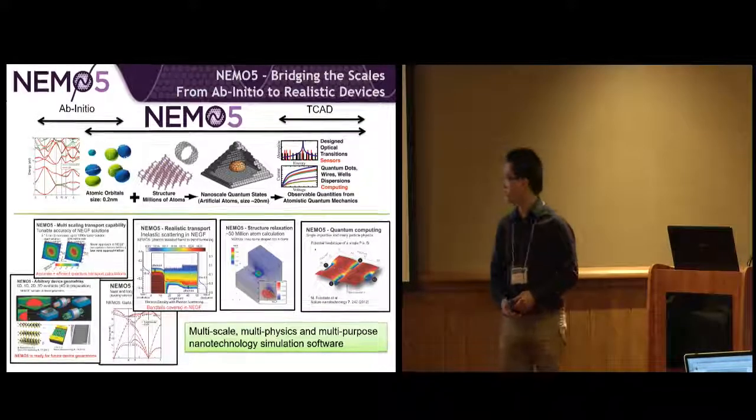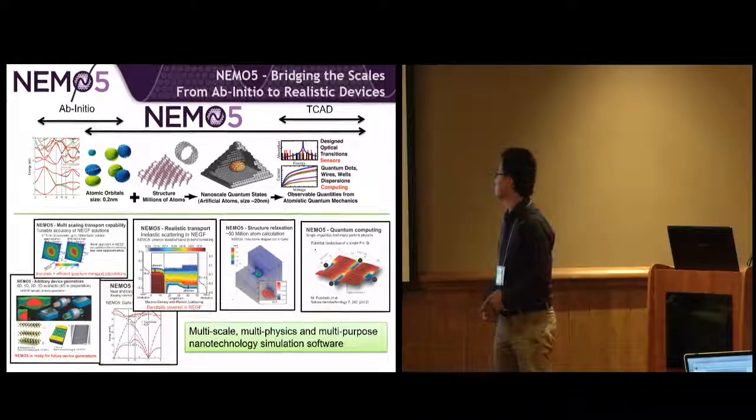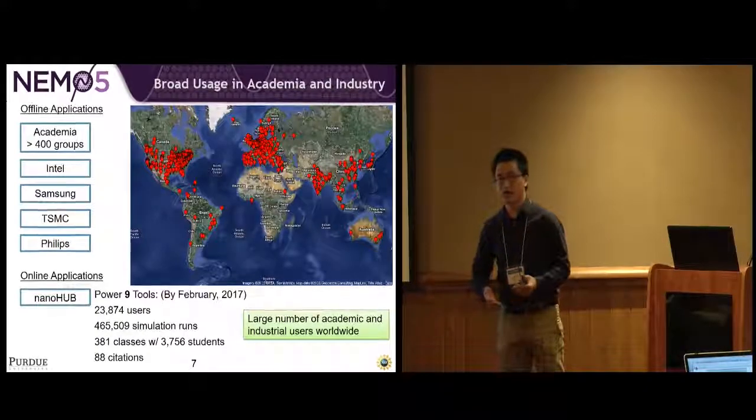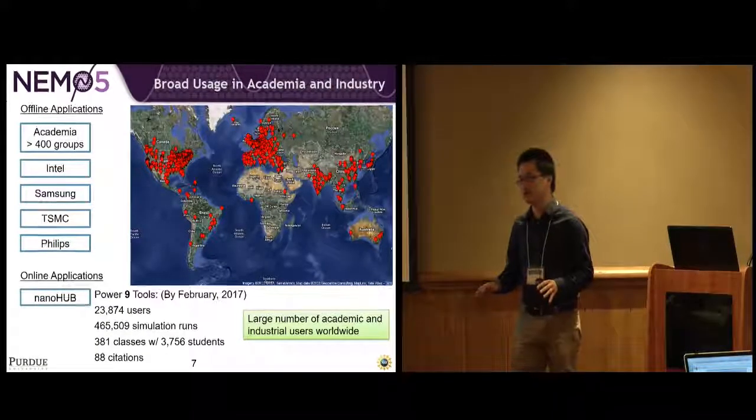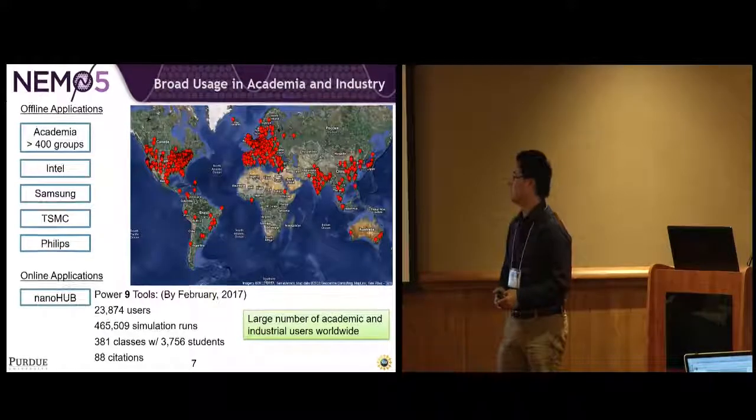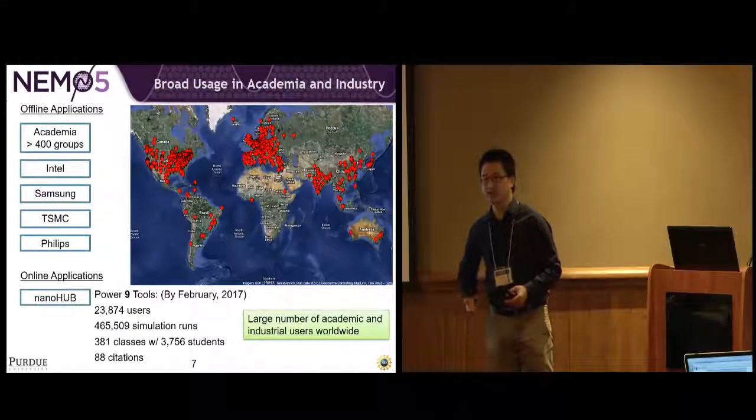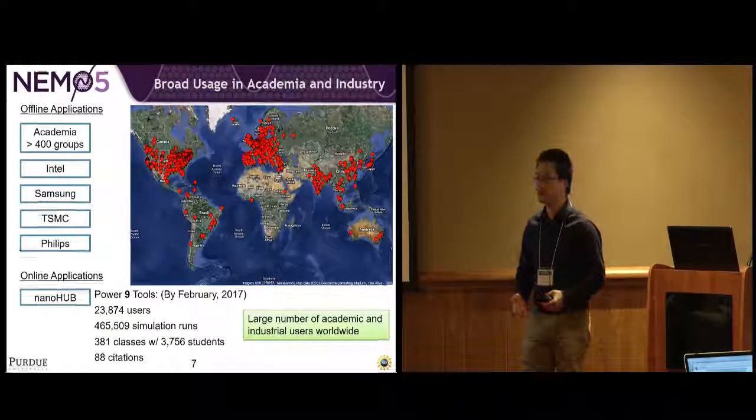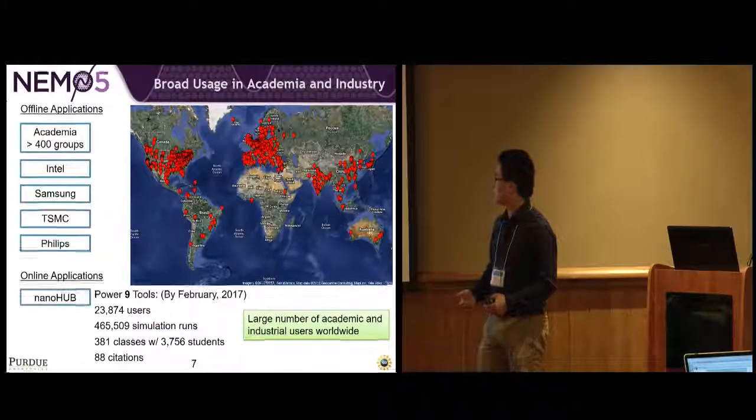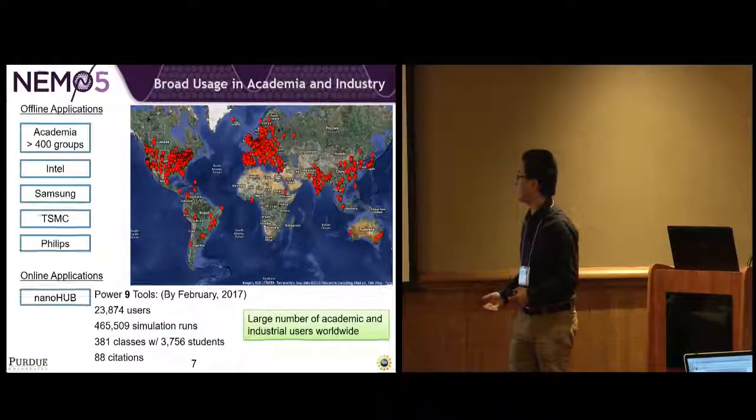NEMO5 is multi-scale, multi-physics, multi-purpose nanotechnology simulation software. NEMO5 can be used both offline and online. Offline means you use it on regular HPC clusters used by more than 400 research groups. Companies like Intel, Samsung, TSMC, and Philips use NEMO5 to design their products.